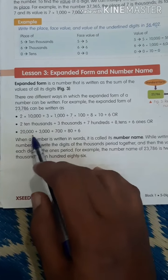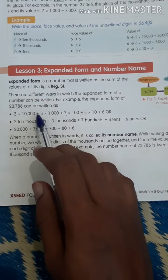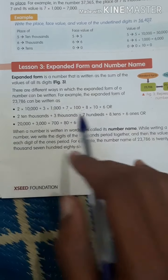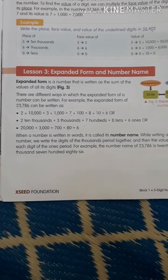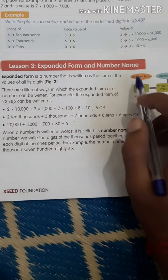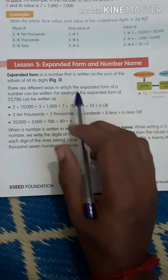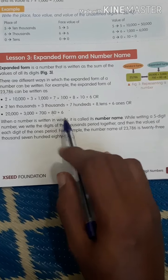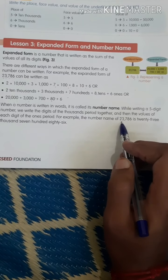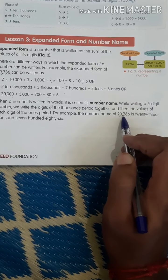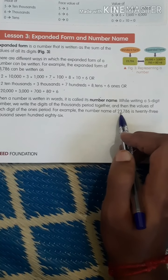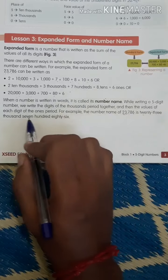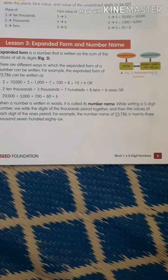This is easier to understand in higher classes too. So: 2 × 10,000 is twenty thousand; 3 × 1,000 is three thousand; 7 × 100 is seven hundred; 8 × 10 is eighty. If you write it in words, that is called the number name. For example, 23,786 — the number name is twenty-three thousand seven hundred eighty-six.